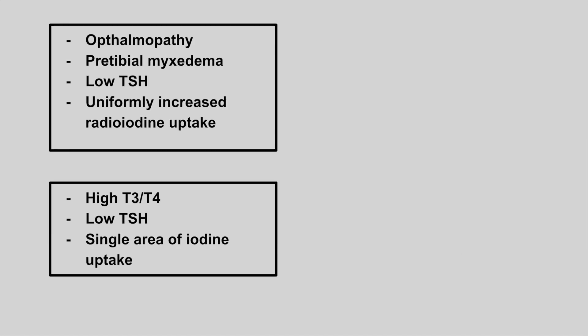The next patient has ophthalmopathy, pretibial myxedema, a low TSH, and uniformly increased radioiodine uptake. This is Graves' disease, which is an autoimmune cause of hyperthyroidism.